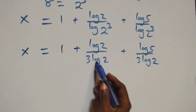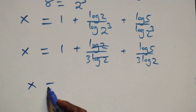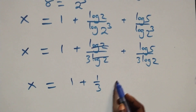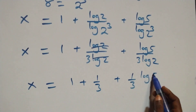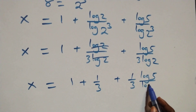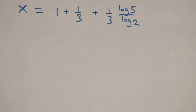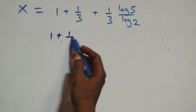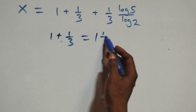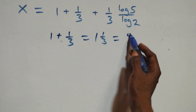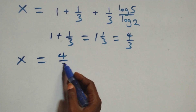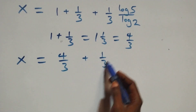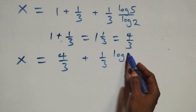Log 2 cancels in the second term, giving 1 over 3. We can also write the third term as 1 over 3 times log 5 over log 2. Then 1 plus 1 over 3 equals 4 over 3, so x equals 4 over 3 plus 1 over 3 times log 5 over log 2.